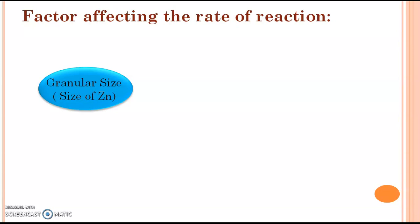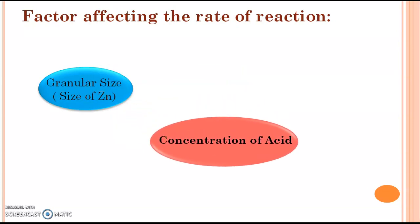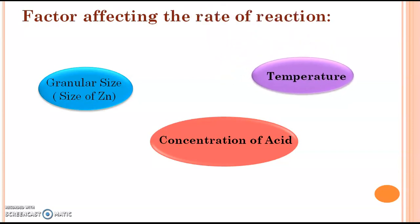The rate of evolution of gas gets increased with smaller particle size. Next is the concentration of acid — if you use concentrated acid, the rate of reaction is more as compared to dilute acid. Lastly, at higher temperature the rate of reaction is increased. So granular size, concentration of acid, and temperature are all factors to consider for the rate of evolution of gas.